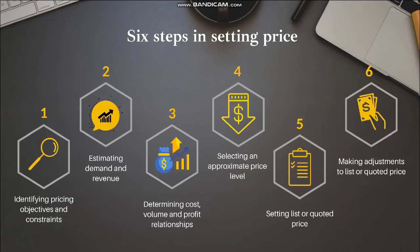The sixth and last step is making special adjustments to the list or quoted price. There are three adjustments involved. The first is discounts, such as quantity discount, seasonal discount, trade discount, and cash discount. The second is allowances, such as trade-in allowance and promotional allowance. The third is geographical adjustment, which involves FOB origin pricing and delivered pricing.